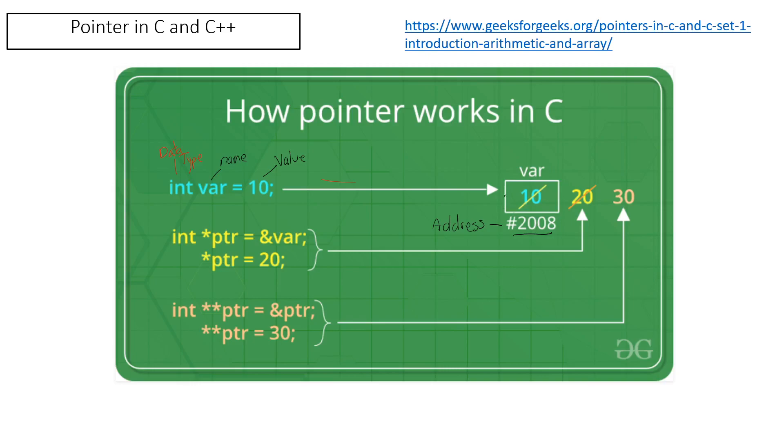For example, let's start with this one. We assign 10 to the variable and then we get the address 2008. Now if we want to use a pointer, we have the same data type and name, but for pointers you need this special symbol, the asterisk, and then we give the value.